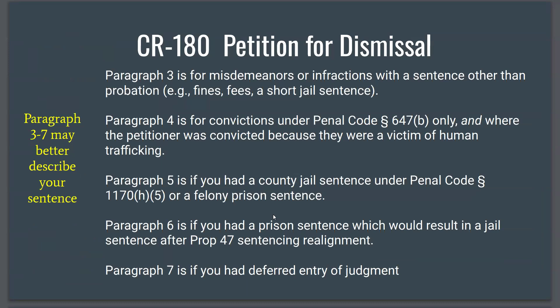If you did not get probation — for instance, a misdemeanor or infraction with a sentence other than probation, like a disturbing-the-peace case that resulted in just jail time or a fee but no probation — that is when you check the box next to number 3. Number 4 is specifically for convictions under Penal Code Section 647(b) only, where the petitioner was convicted because they were a victim of human trafficking. Paragraph 5 is for a county jail sentence under Penal Code Section 1170(h)(5) or a felony prison sentence. Paragraph 6 is if you had a prison sentence which would under today's laws result in a jail sentence after Prop 47 changes in 2011, commonly including possession of certain narcotics and petty theft. Paragraph 7 is if you had a deferred entry of judgment.